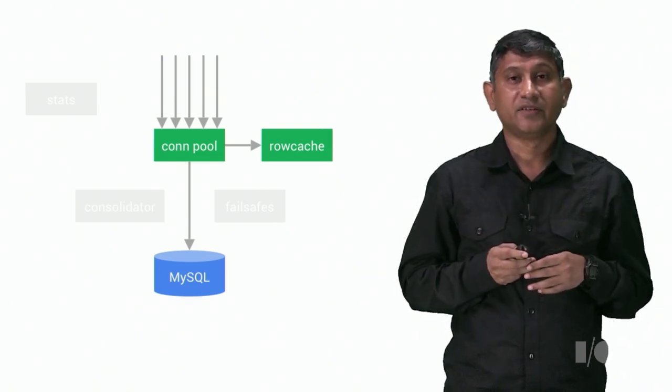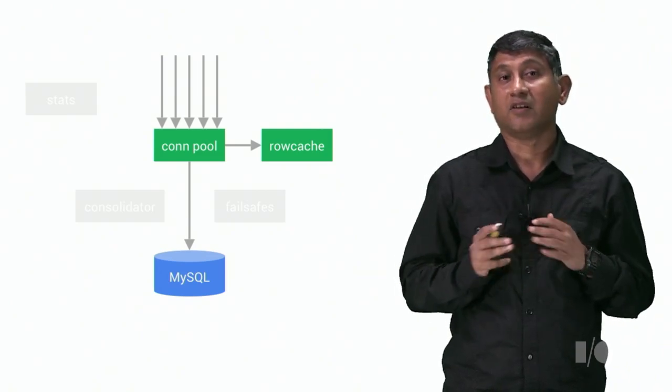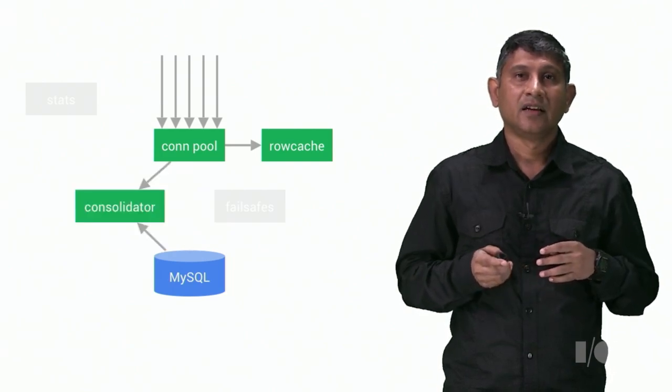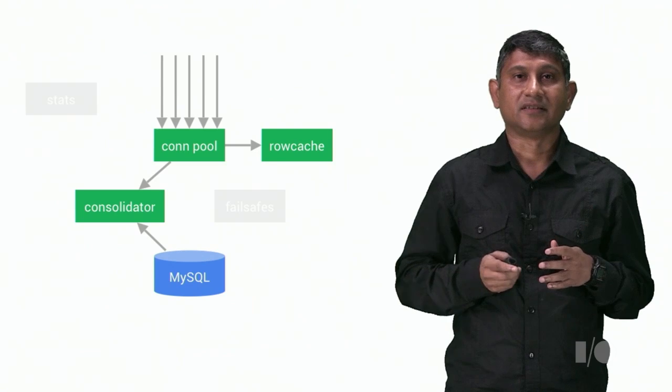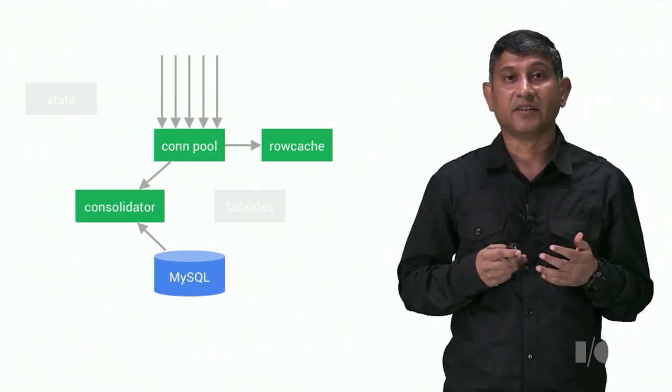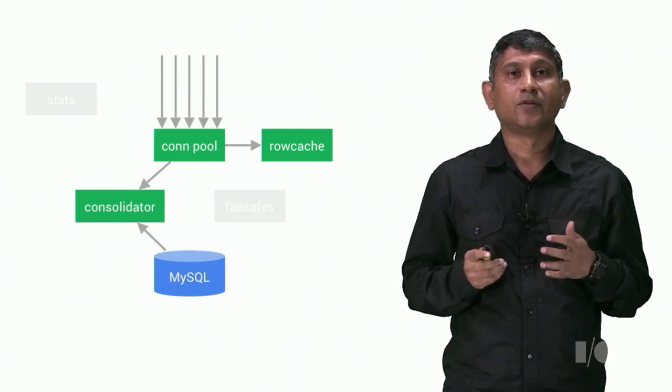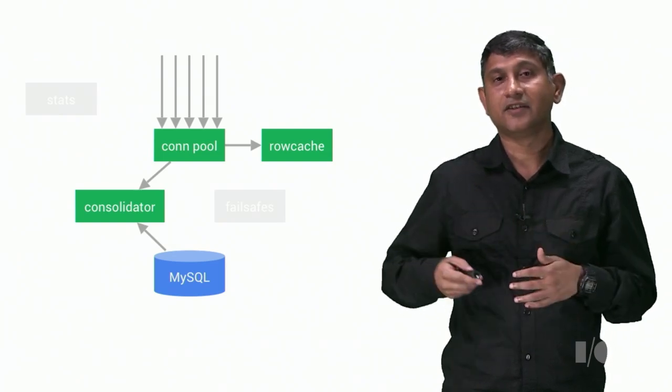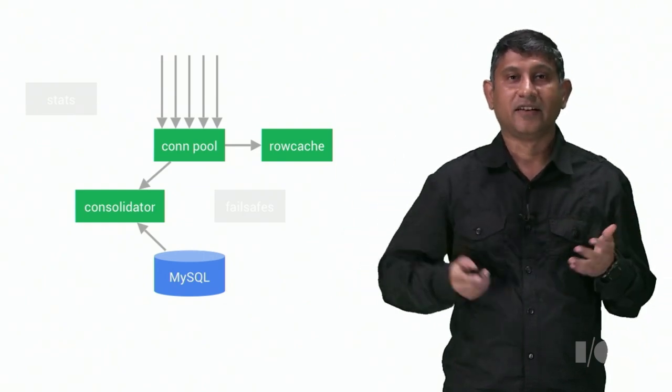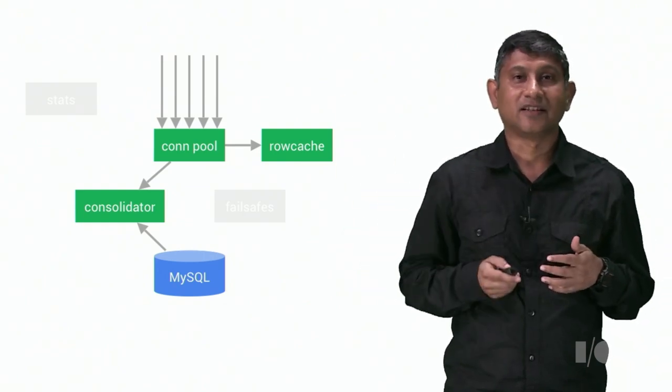Depending on your usage pattern, the row cache could give you an order of magnitude increase in your serving capacity. VTTablet has more optimizations. Like for example, if a query is executing and other identical requests come in, it just holds off on those requests until the existing query has returned. Then it returns that result to all the queries that are waiting on this. You'll be surprised at how often this happens.